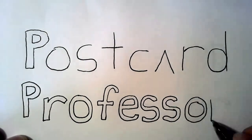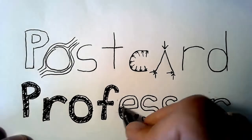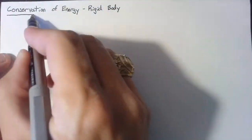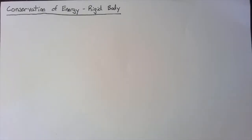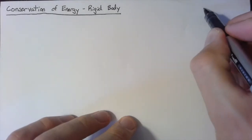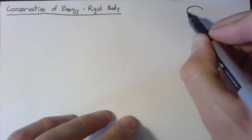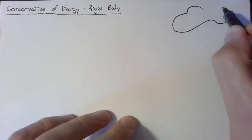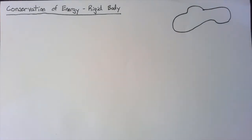Hello and welcome to the Postcard Professor, where we take complex ideas and explain them in the space of a postcard. In this video, we're going to be going over the theory for the conservation of energy for a rigid body. Our goal here is to keep this as general as possible, so we're going to be looking at a pretty amorphous shape.